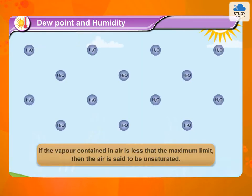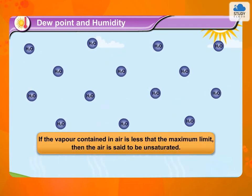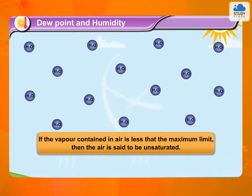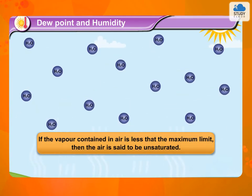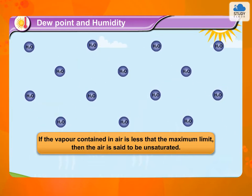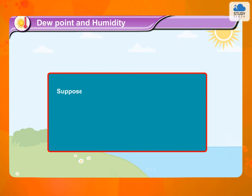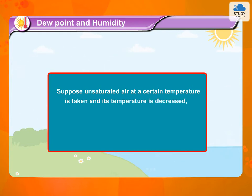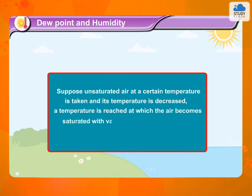If the vapor contained in air is less than the maximum limit, then the air is said to be unsaturated. Suppose unsaturated air at a certain temperature is taken and its temperature is decreased. A temperature is reached at which the air becomes saturated with vapor. This temperature is called the dew point temperature.